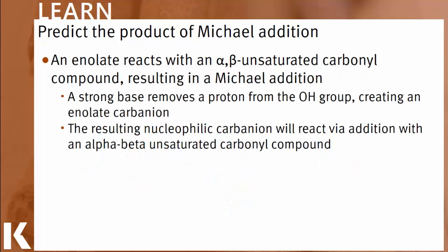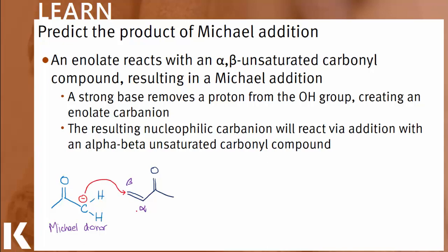Michael additions are a very specific subtype of nucleophilic addition reactions, where the enol — which is what we term the Michael donor — will attack a compound that has a carbonyl with an alkene at the alpha and beta position with respect to the carbonyl. The general mechanism of action is that the nucleophilic carbon in the enolate will attack the beta carbon on the second molecule.